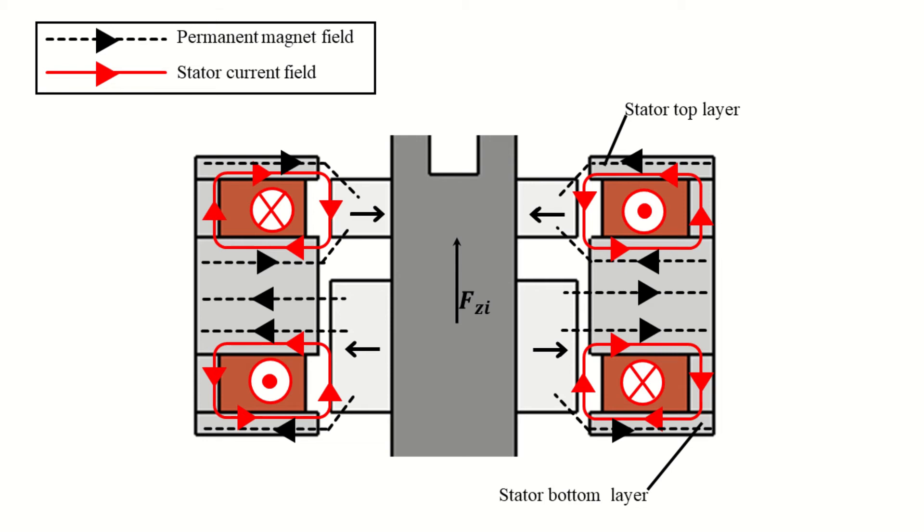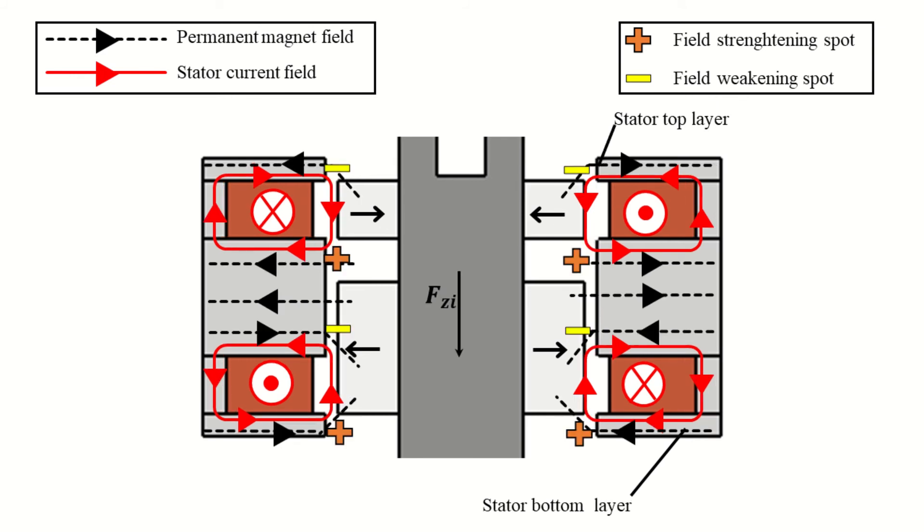The magnetic field from the permanent magnets interacts with the field generated by the stator currents. Owing to this specific configuration, the magnetic field is either reinforced in the upper side and weakened in the lower side of the stator teeth, or it is reinforced in the lower side and weakened in the upper side according to the current direction. This difference in magnetic field distribution results in an electromagnetic force that pushes the rotor along the axial direction.